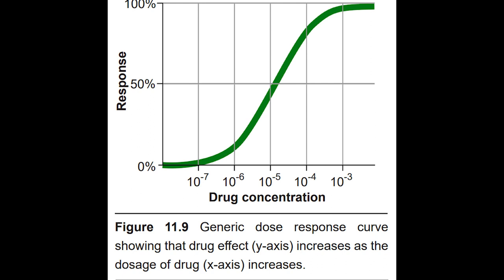It is also helpful to become familiar with the dose-response curve, which is a graph that plots the activation of a receptor on the y-axis and increasing dosages of a drug on the x-axis. In most cases, as neurotransmitter concentration increases, so does the activation of the corresponding receptor. The shape of the dose-response curve is described as sigmoidal — the S-shaped curve that is common to many fields of science, including ecology, microbiology, physics, and chemistry.